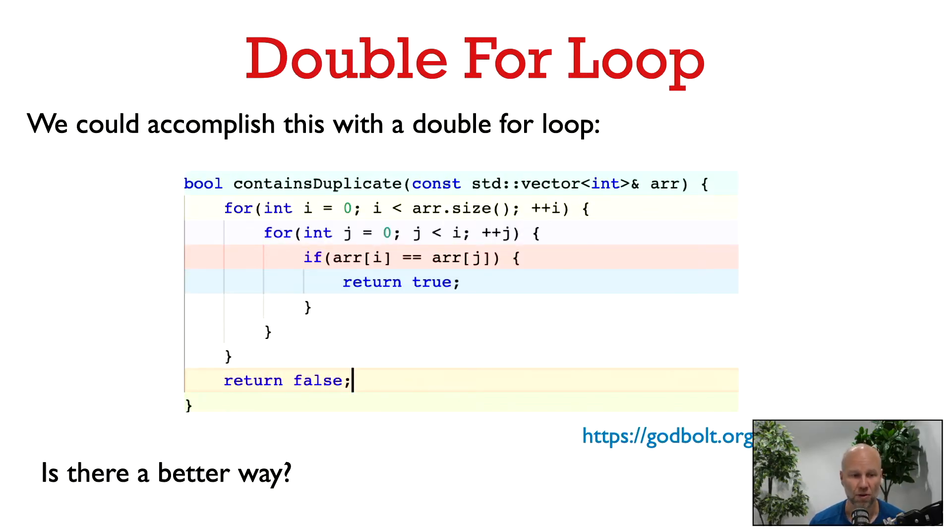One way to accomplish this basic task is with a for loop. For j equals 0 to i minus 1, we check if aj is equal to ai. So this gives us a way to solve the whole problem using a double for loop. In the outer loop, we iterate over each ai, and in the inner loop, we check if we have previously seen ai.